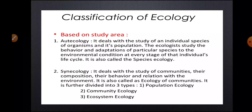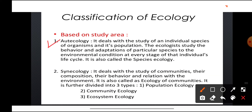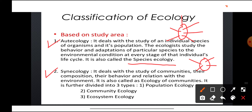Based on study area, ecology has two parts. The first is autecology — the study of the interaction of a single individual with its environment. It is also called species ecology. The second is synecology — the study of the interaction of a community (group of individuals of different species) with its environment. Synecology is of three types: population ecology, community ecology, and ecosystem ecology.